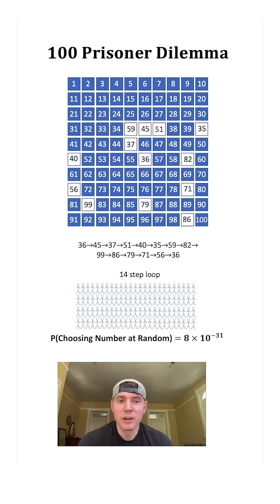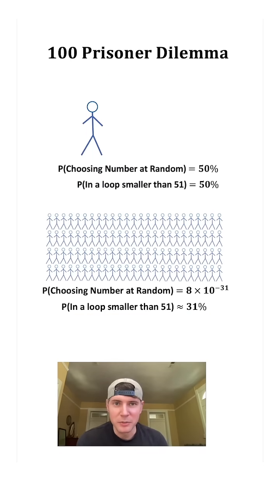It's going to be the probability that every prisoner's number is in a loop of less than 50 numbers. And this probability ends up being around 31%. It's a fascinating situation where the individual's probability is the same, but the group's can be greatly improved.